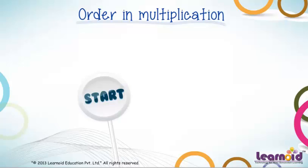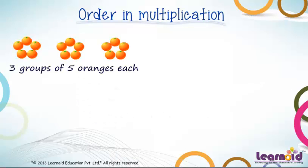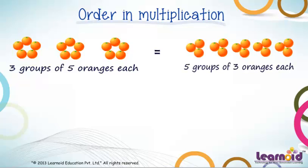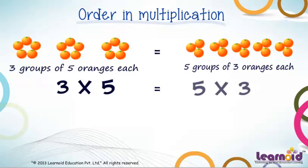Today we will learn order in multiplication. These are three groups of five oranges each. These are five groups of three oranges each. Or we can say that three into five is equal to five into three.